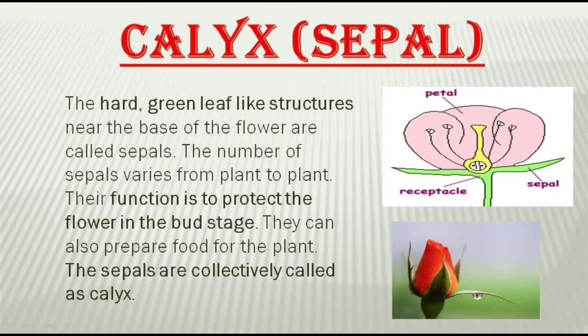Calyx makes the outermost whorl of the flower. As you can see in the picture, from the base you find the green color structure — this makes the outermost whorl, that is calyx. The hard green leaf-like structures near the base of a flower are called sepals. This green leaf-like structure is the sepal, and the outermost whorl, calyx, is made up of many sepals. A single unit of calyx is a sepal. The number of sepals varies from plant to plant.